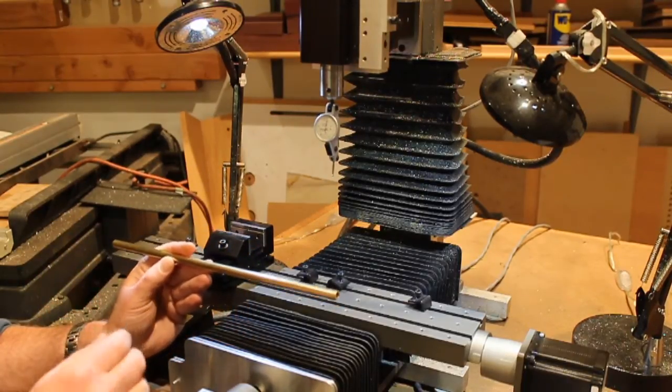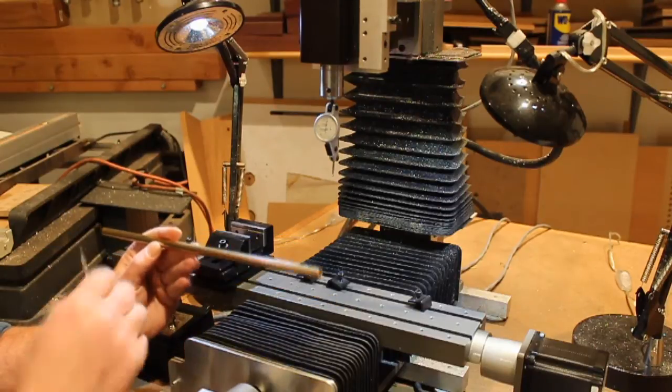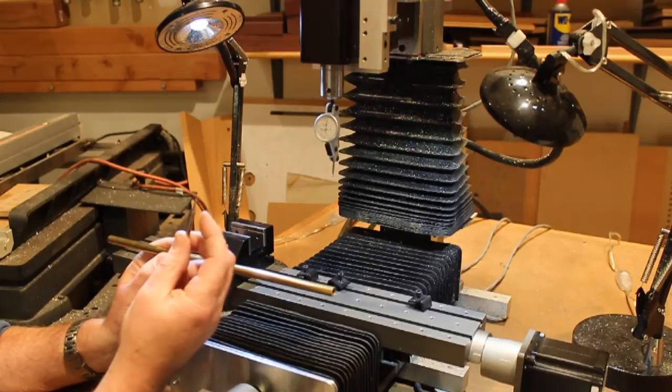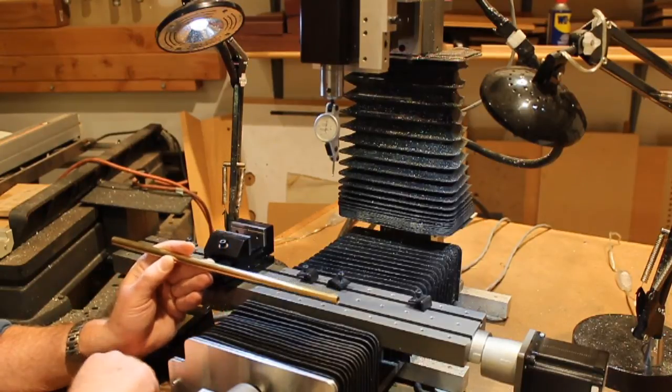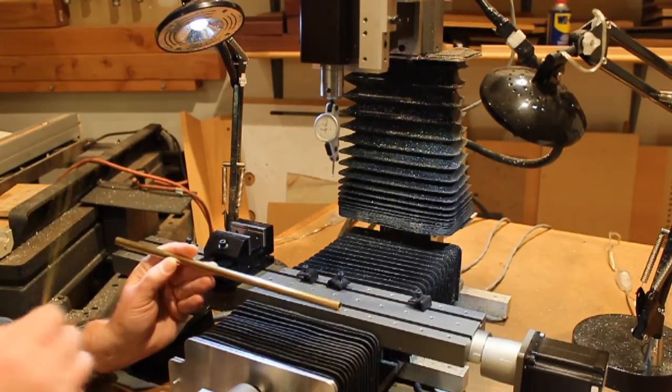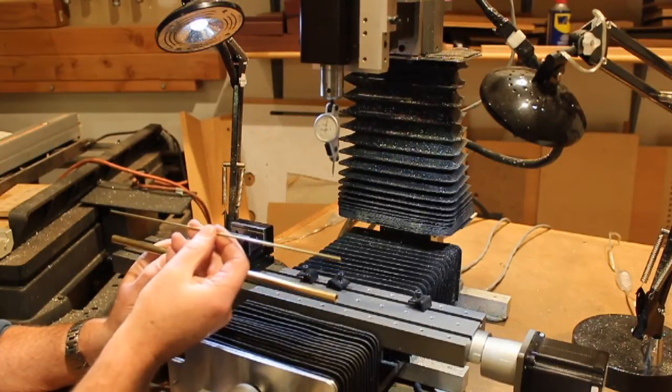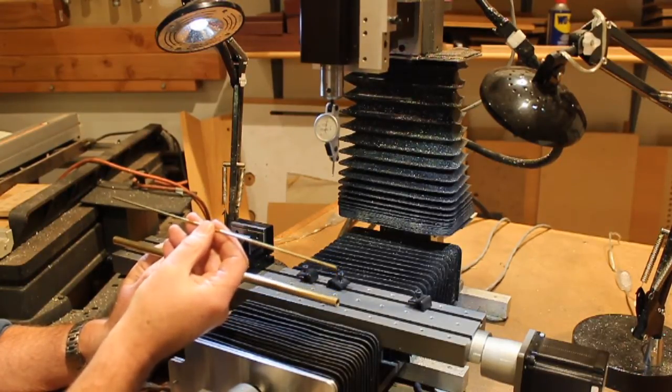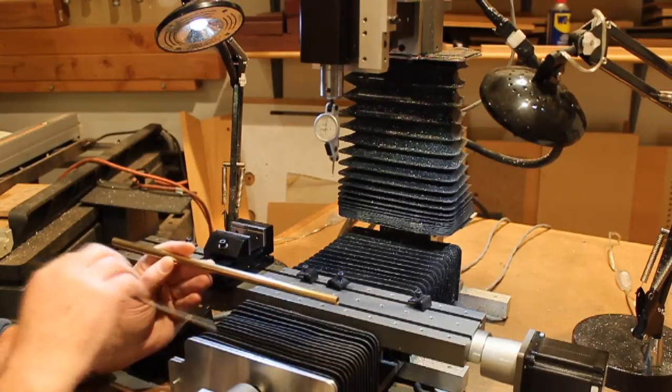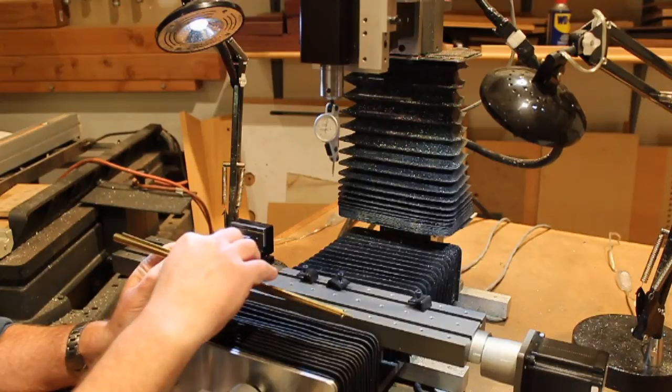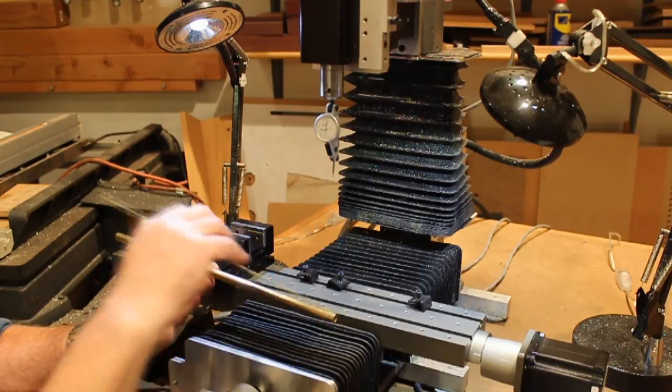What I'm going to do instead is use a round bottom end mill that matches the diameter of what I'm going to use, the key, which is a 3/32nd diameter rod. So the process is the same, it's just that I'm using round stock as the key rather than square stock.